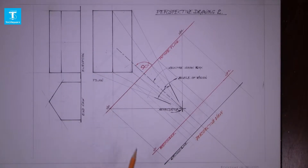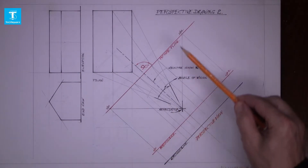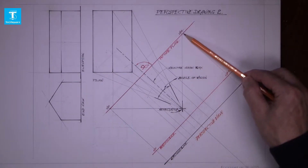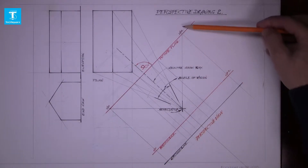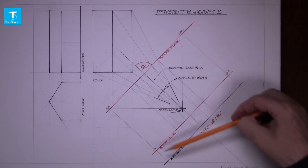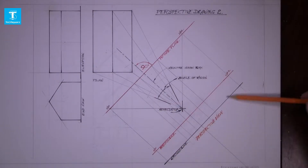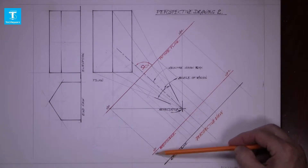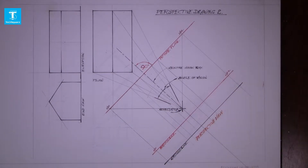Vanishing point one and vanishing point two are brought down, and the ground line and the horizon line drawn.